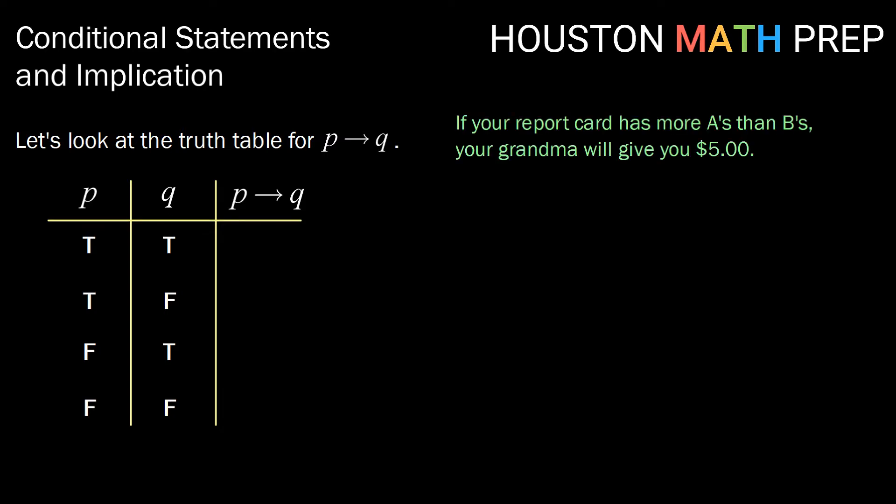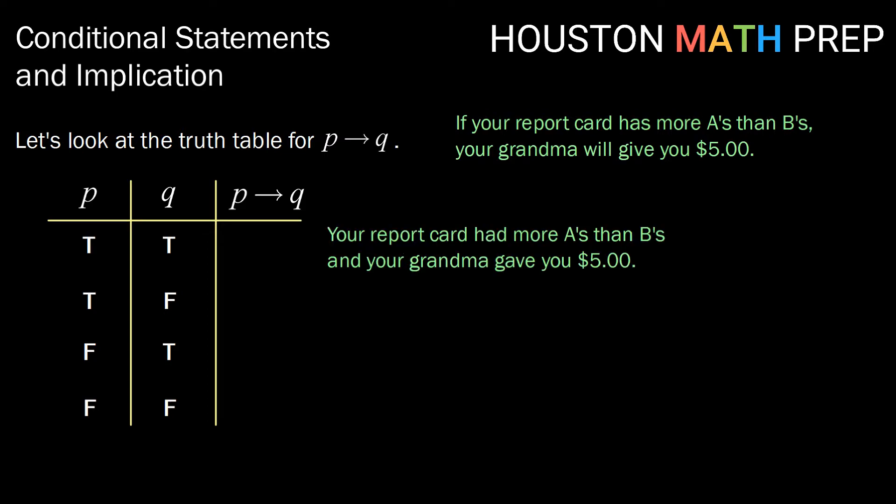We're going to do this through the lens of our promise: if your report card has more A's than B's, your grandma will give you $5. So we're going to think about in each case, did grandma keep her promise? If P is true and Q is true — your report card had more A's than B's, and your grandma gave you $5 — grandma kept her promise. So we would say that has a true value for P implies Q.